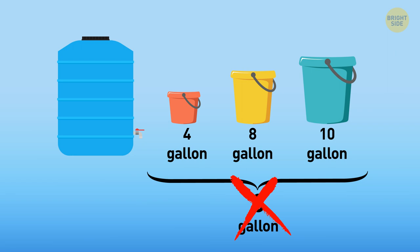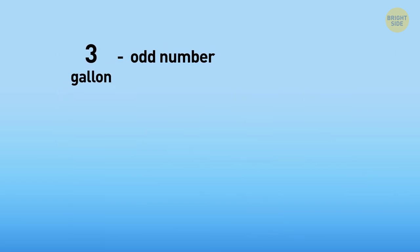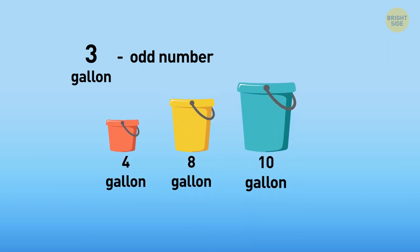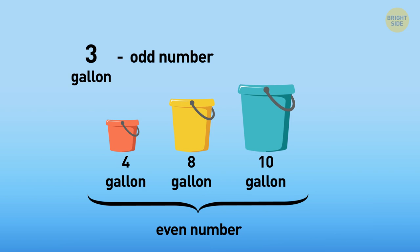It's impossible. The interviewer asked Josh to measure three gallons, which is an odd number. But she offered Josh the buckets that only fit an even number of gallons, 4, 8, and 10. So he can't be precise in his measurements.